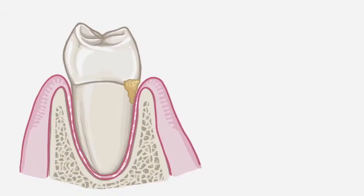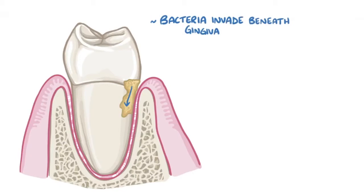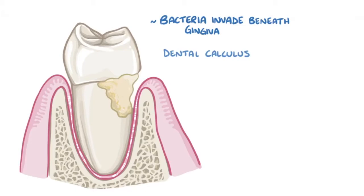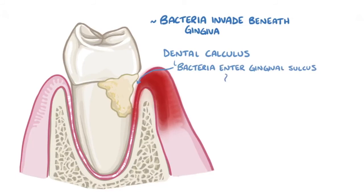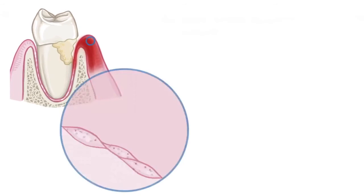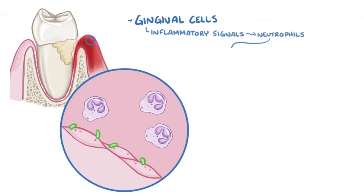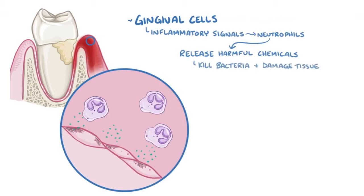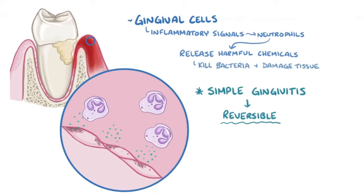If dental plaque above the gingiva keeps building, the bacteria within that biofilm can invade beneath the gingiva, where it becomes really difficult to reach with brushing. Eventually, it can form a hard mass called dental calculus. Dental calculus creates a space for further bacterial plaque formation because it is hard to remove. From there, bacteria can enter the gingival sulcus and cause gingival inflammation, or gingivitis. Damaged gingival cells release inflammatory signals that recruit neutrophils to the area, and those neutrophils can release harmful chemicals that kill bacteria as well as damage nearby tissue. Fortunately, simple gingivitis is a reversible condition, and the damaged tissue can heal over time as long as the infection is stopped and treated.